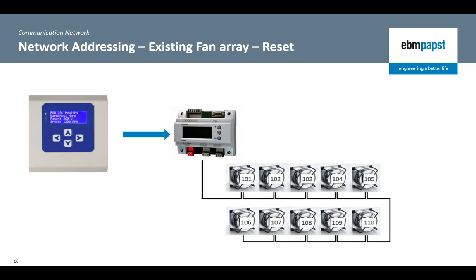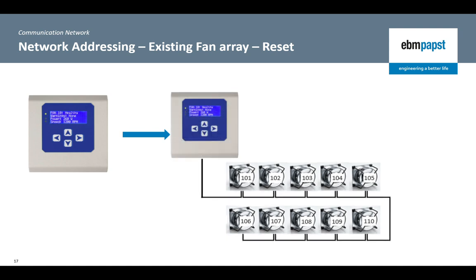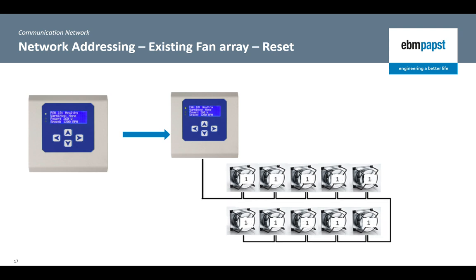If, however, the MDC controller is being used to replace a third-party application controller that has assigned specific device addresses for each fan in the array, the network of fans must be reset back to their factory default conditions and the network re-initialised as a new fan array. As described previously, the MDC will search for a fan with Modbus Device Address 2 when connecting to an existing array. In this case, if the first device in the network has been assigned address 101, the MDC starts by searching for Modbus Device Address 2, it will not move on until it has been found and the network initialisation will be unsuccessful. By resetting the fans back to default address 1 for every fan in the array, the MDC can connect to the fans as if it was a brand new installation.